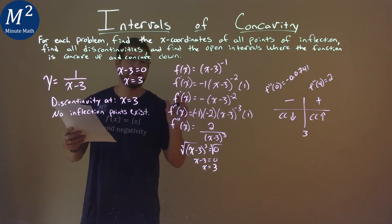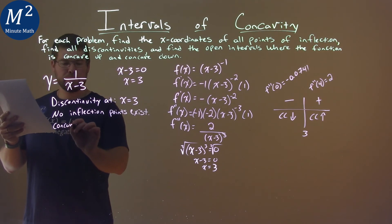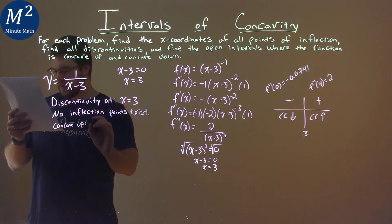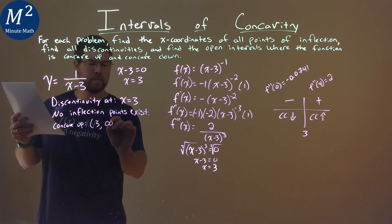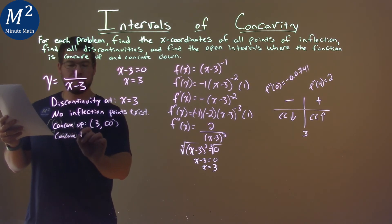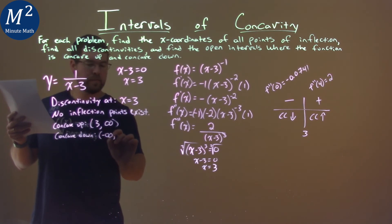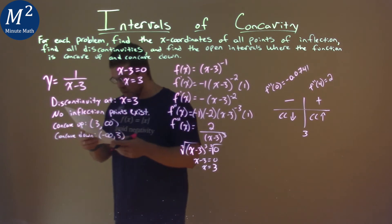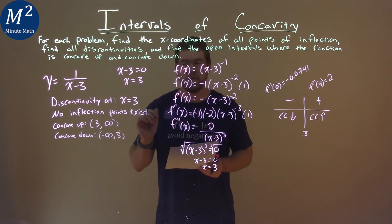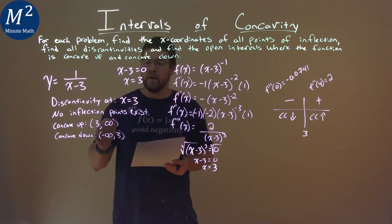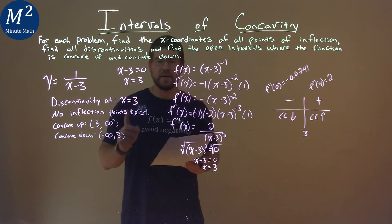But we can tell the intervals where we're concave down and concave up. We're concave up from the interval 3 to positive infinity, and we're concave down from negative infinity to 3. So again, our final answer here is we have a discontinuity at x equals 3, no inflection points exist, concave up from 3 to positive infinity, and concave down from negative infinity to 3.